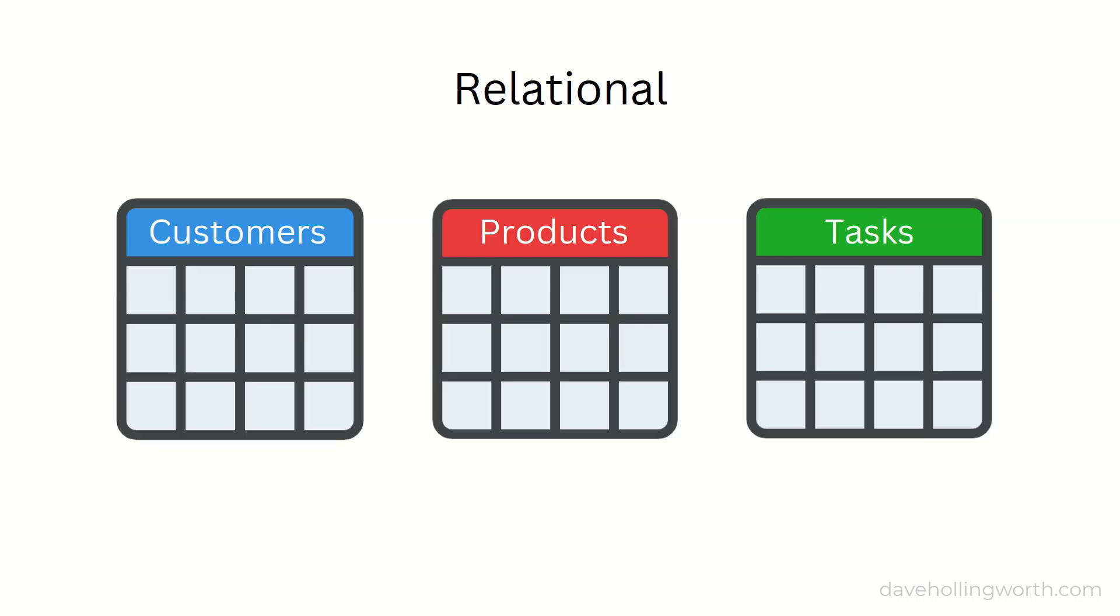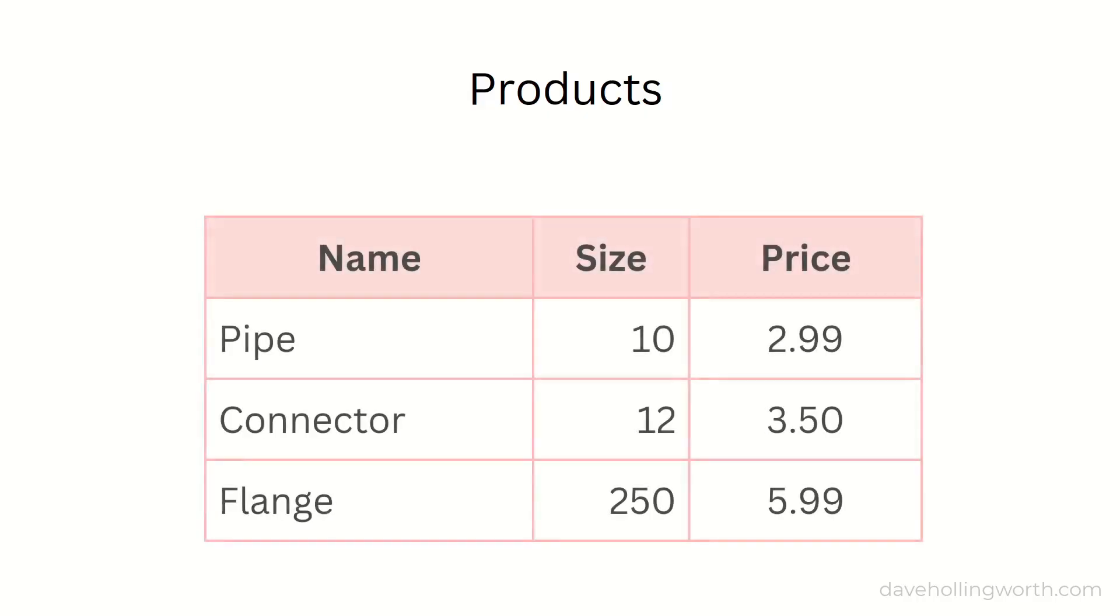Each row of a database table is one item of data. For example, each row of a product table contains the data about one particular product. A table could contain hundreds or even thousands of rows. Each column of the table represents one attribute of each record. So a product might have a name, a size, a price, and so on.